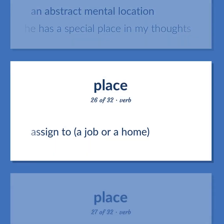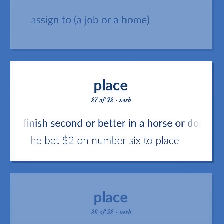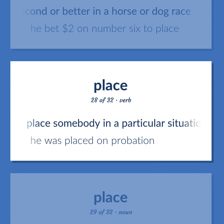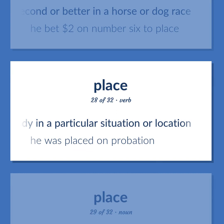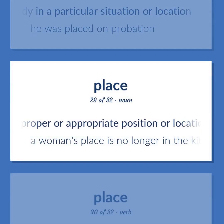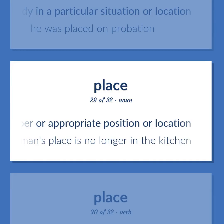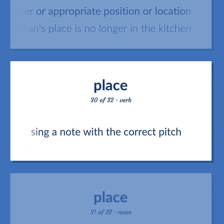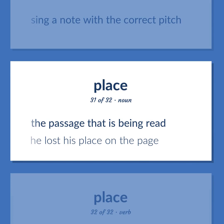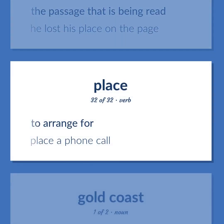Place: assigned to a job or a home. Finish second or better in a horse or dog race — he bet $2 on number 6 to place. Place somebody in a particular situation or location — he was placed on probation. Proper or appropriate position or location — a woman's place is no longer in the kitchen. Sing a note with the correct pitch. The passage that is being read — he lost his place on the page. To arrange for — place a phone call.